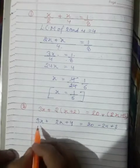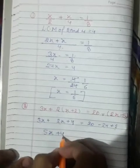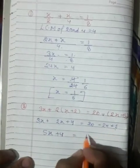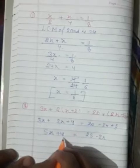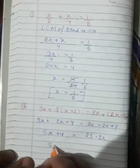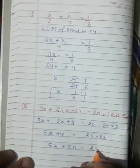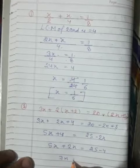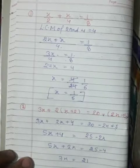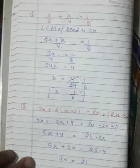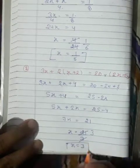So: 2x plus 3x gives 5x, plus 4 is equal to 20 plus 5, which is 25, minus 2x. Transposing — variables on one side and constants on the other: 5x plus 2x is equal to 25 minus 4. So 7x is equal to 21, and x is equal to 21 divided by 7, which is 3. Our answer is x is equal to 3.